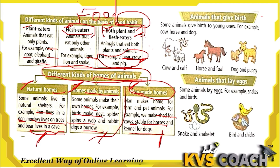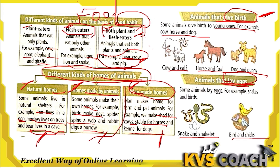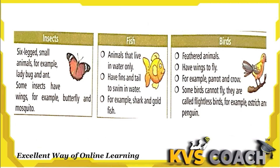On the basis of giving birth, some animals give birth to young ones directly — for example, cow, horse, and dog. The cow's baby is called a calf, the horse's baby is called a foal, and the dog's baby is called a puppy. Some animals lay eggs, like snakes and birds. Snake young ones are called neonates and bird young ones are called chicks.